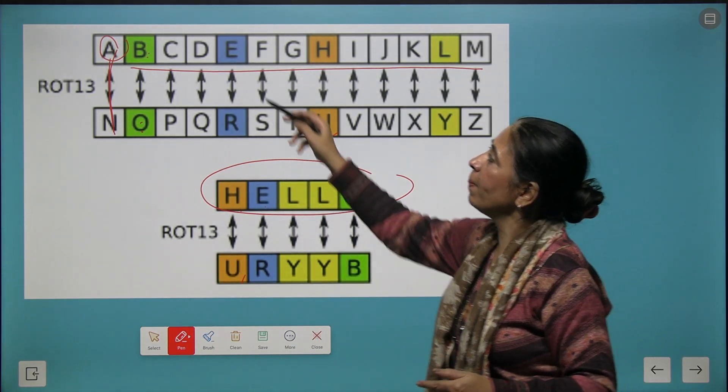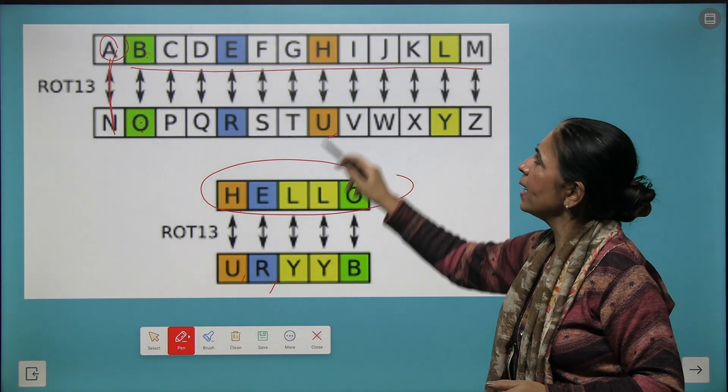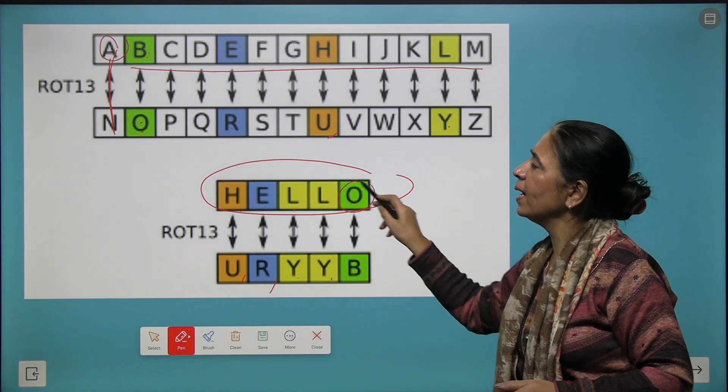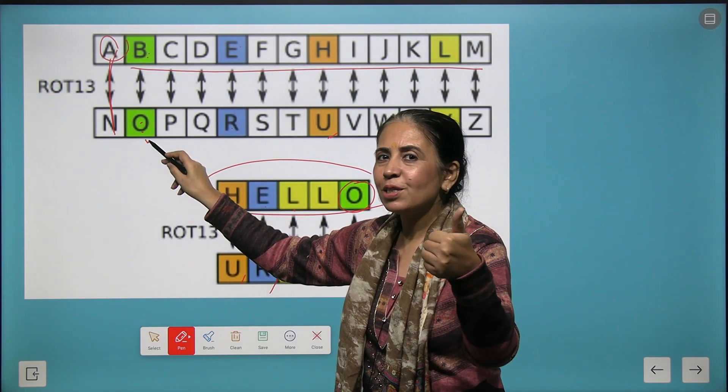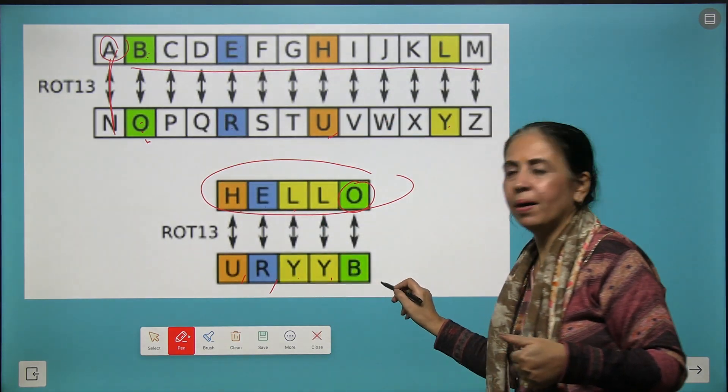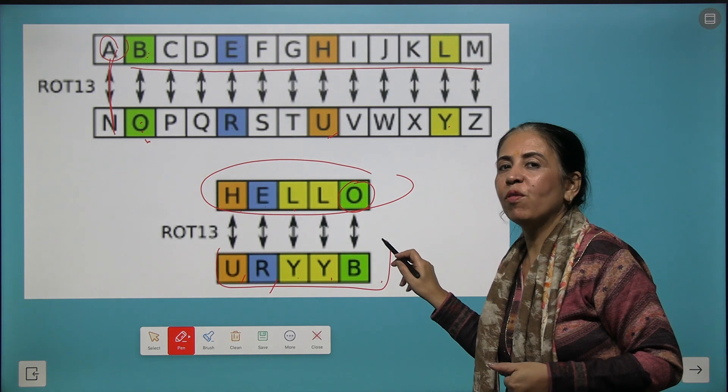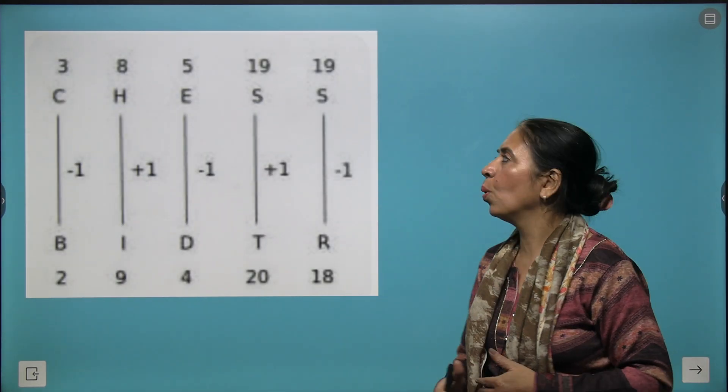Then we have E, which will be replaced by R. We write down R here. Next comes L. L is replaced by Y two times. Next one is O. What will you write in place of O? We write B here, and your code becomes URYYB. Interesting way to write a code.